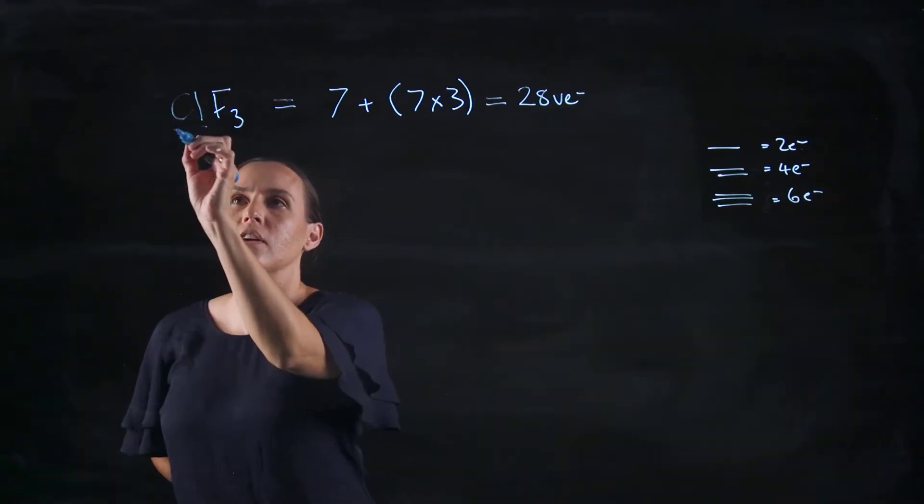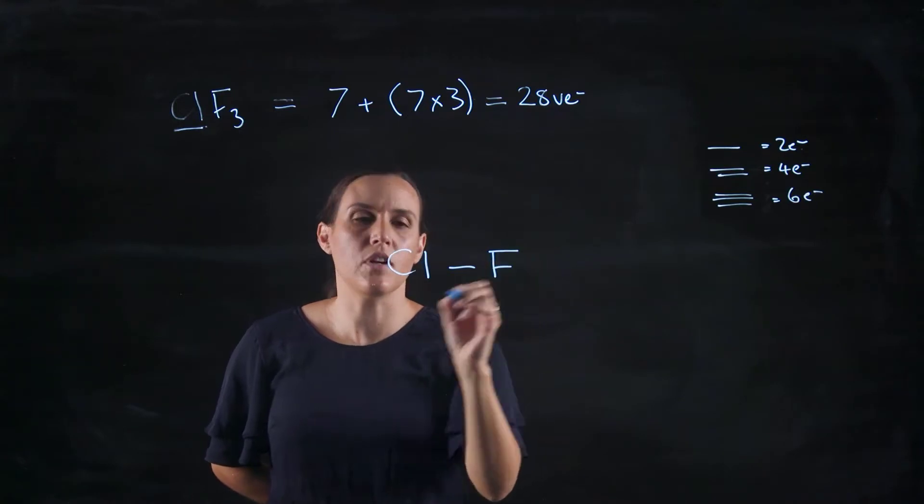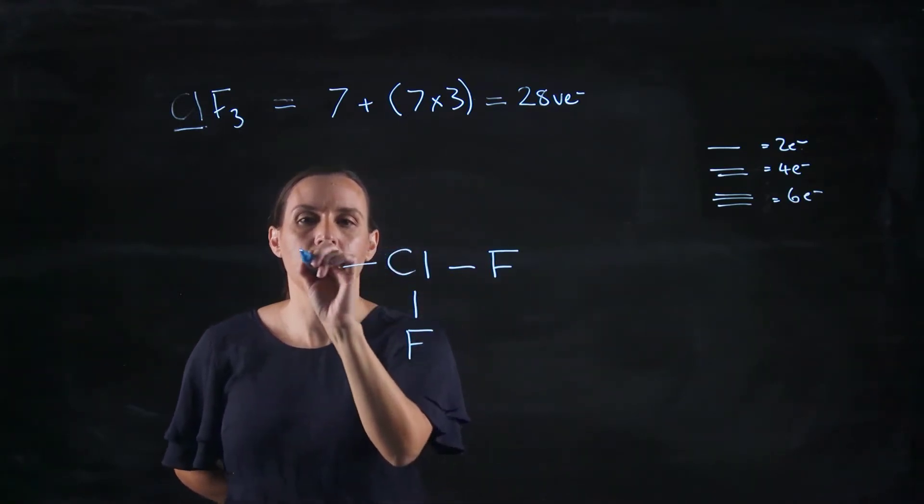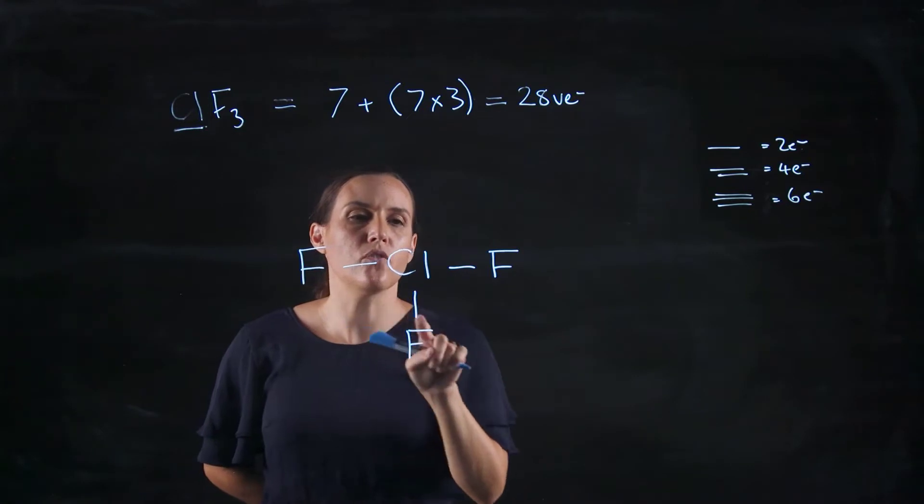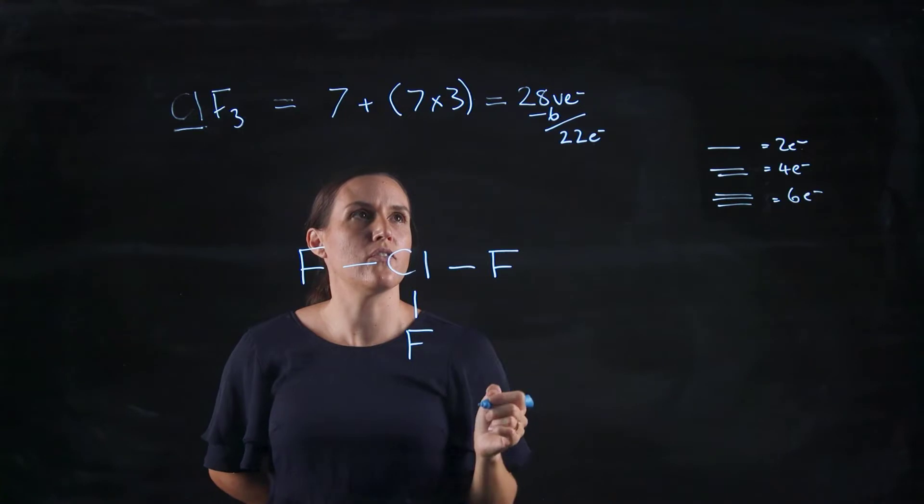Now what we know is chlorine is the central atom, and we've got those three fluorines coming off that central chloride. So we'd use two, four, six. So we've got 22 electrons left over.